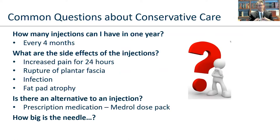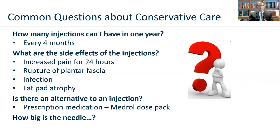Common questions about the corticosteroid injection: How many times can I have it? Roughly every four months — about three to four times a year. Side effects include possibly increased pain for 24 hours, possible rupture of the plantar fascia, risk of infection with any injection, and fat pad atrophy. We go into each of those in more detail. The alternative is an oral steroid, which has the same effect but is not as concentrated.